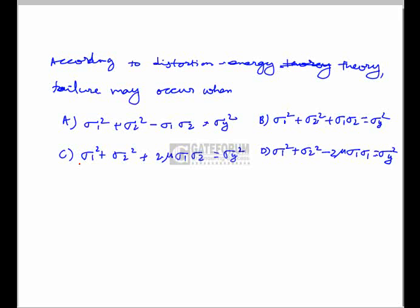For the distortion energy theory of failure, failure may occur when: (A) σ₁² + σ₂² - σ₁σ₂ = σᵧ²; (B) σ₁² + σ₂² + σ₁σ₂ = σᵧ²; (C) σ₁² + σ₂² + 2 - σ₁σ₂ = σᵧ²; (D) σ₁² + σ₂² - 2σ₁σ₂ = σᵧ².